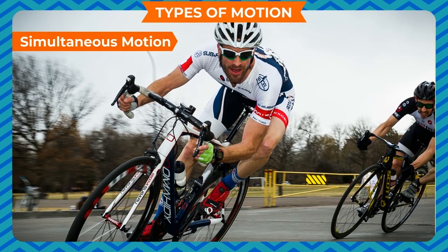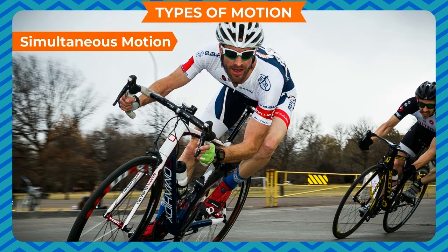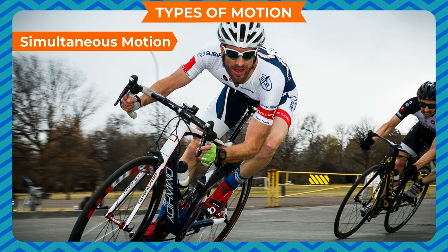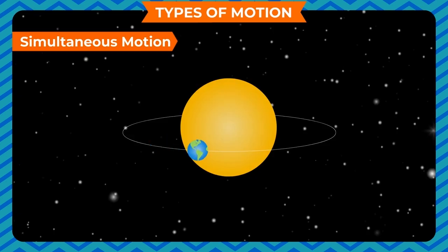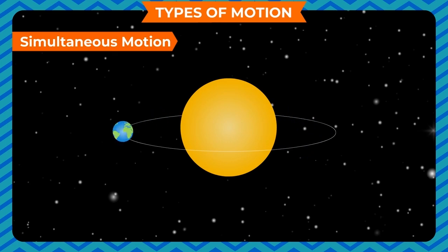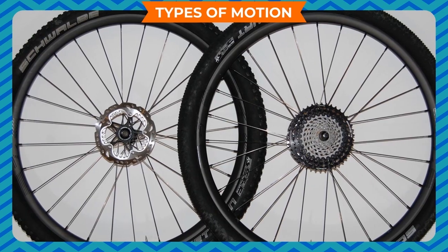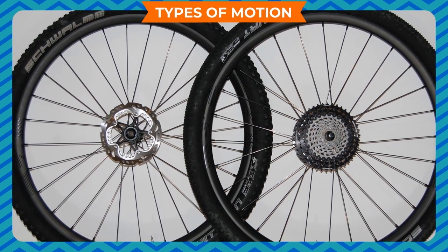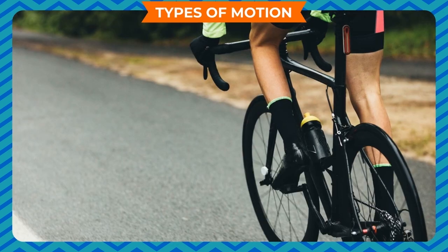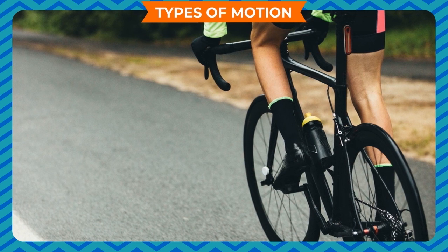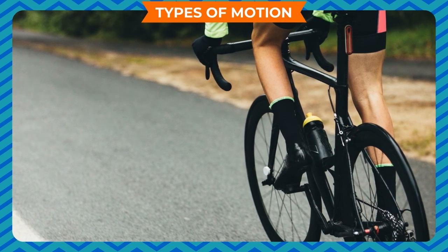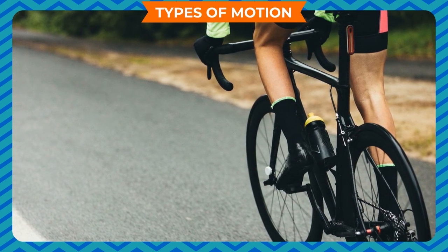Simultaneous motion: an object can have more than one kind of motion at the same time. The earth rotates (rotational motion) about its axis and at the same time revolves around the sun in a fixed circular path (revolutionary motion). The wheels of a bicycle rotate (rotational motion) and at the same time move forward in a straight line (translatory motion). Thus, these two types of motion occur simultaneously, and this is called simultaneous motion.